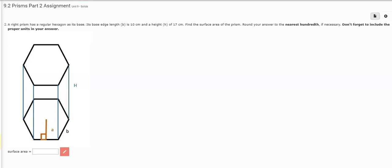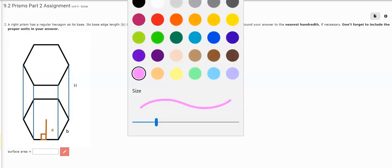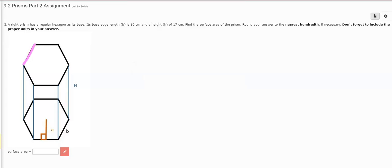Okay, so what I am asked here is to find the surface area of the shape. So the first thing I need to do is realize this is a hexagonal prism. So each base edge length is 10, which means all of these sides are 10.